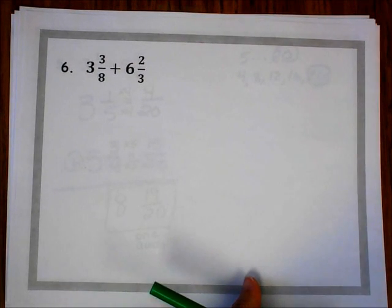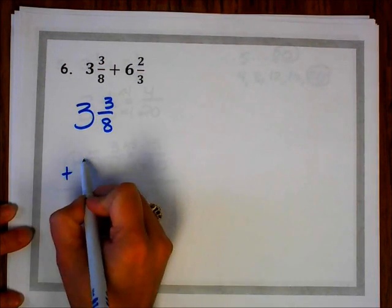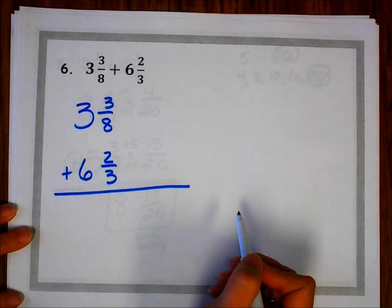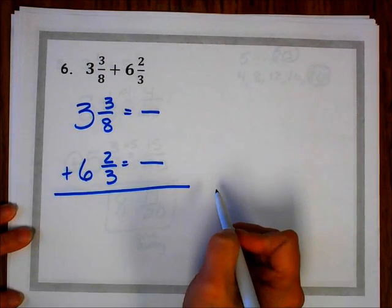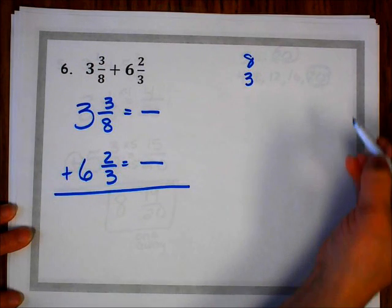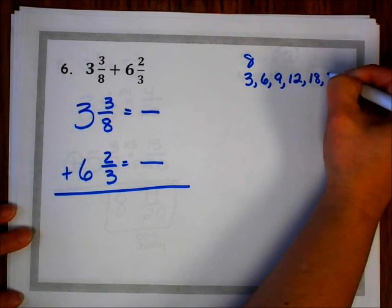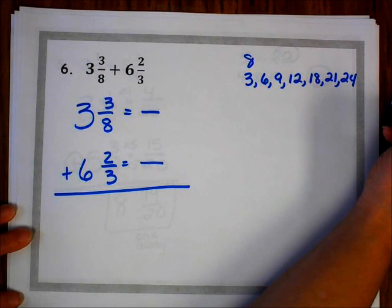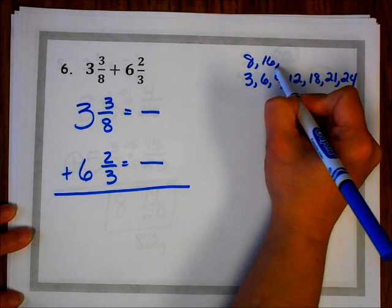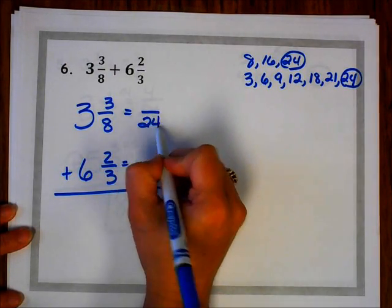Let's try number 6: 3 and 3 eighths plus 6 and 2 thirds. I do not have a common denominator, so I know I'm going to have to find one. I'm going to count by 8s and count by 3s until I find a multiple they have in common. Counting by 3s: 3, 6, 9, 12, 18, 21, 24. Counting by 8s: 8, 16, 24. So my common denominator for 8 and 3 is 24.